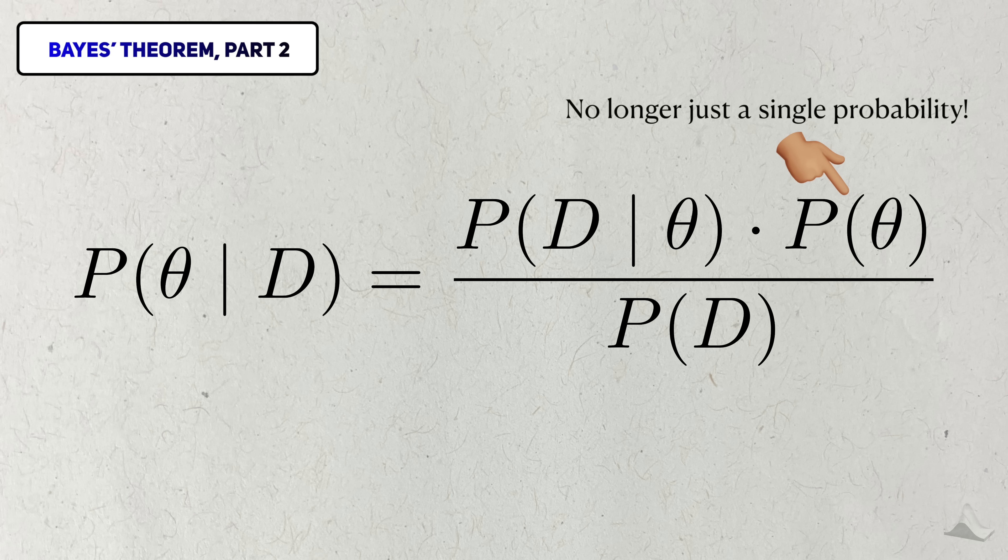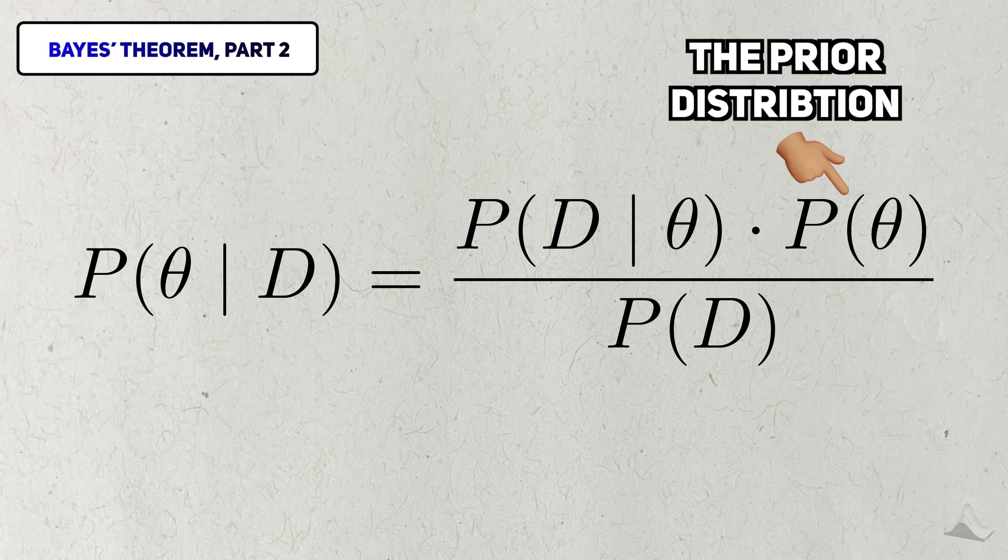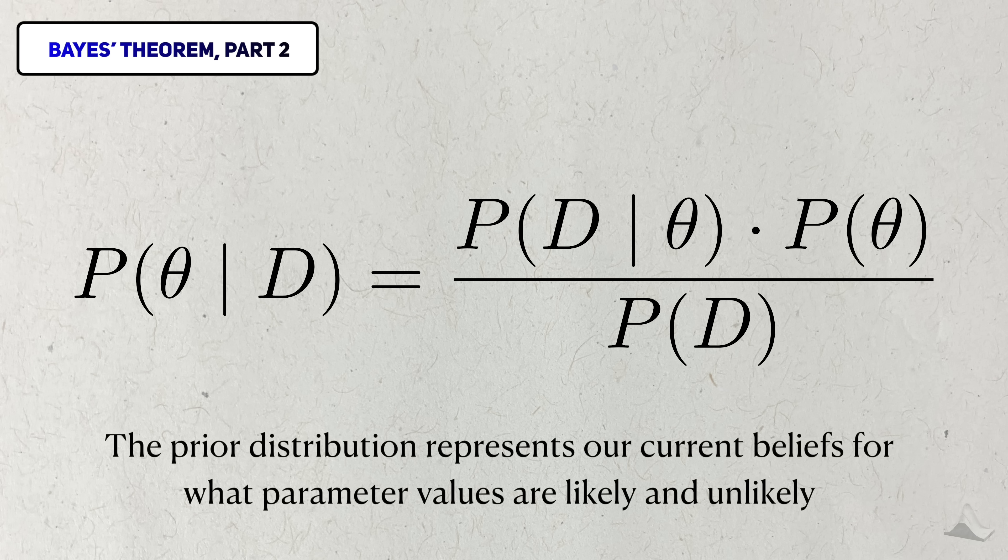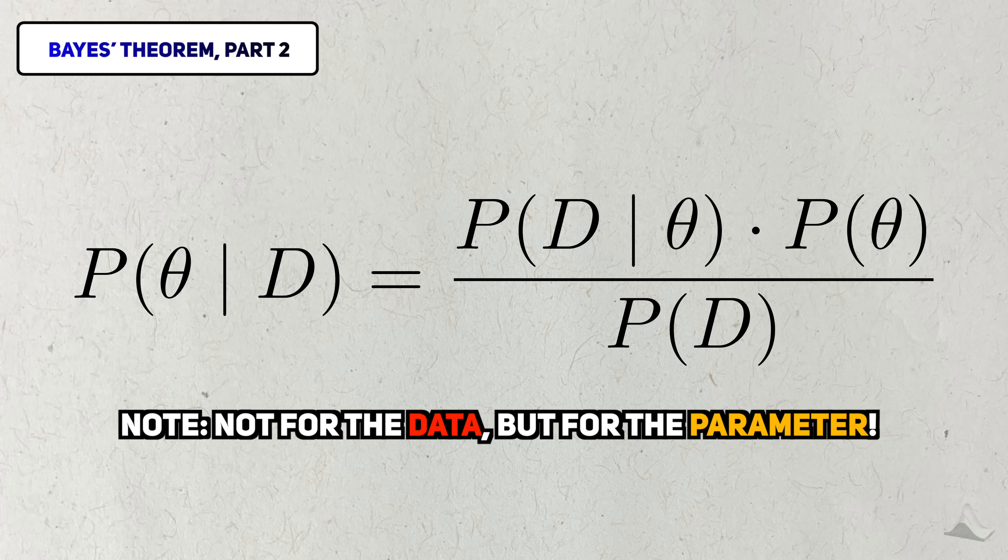This term is still the prior, but it's no longer just a single probability, but an entire probability distribution, which we call the prior distribution. The prior distribution represents our beliefs about which parameter values are likely and unlikely. Not the data we collect, but the parameter. As an example, let's use the response rate of a binomial distribution.